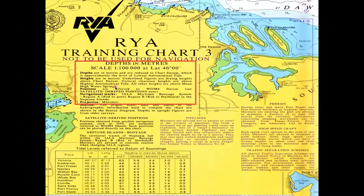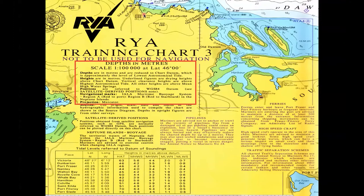Then it goes on to say the underlined figures are drying heights. Anything on an Admiralty chart that dries out is green. If you look carefully at the top of the chart, here's a drying height: 2.7 with a little underline beneath it. That means it dries out 2.7 metres above chart datum. So if you went to that particular spot at low water you would have 2.7 metres of land. If the tide is 5 metres at high water, it needs 2.7 metres of water to cover the drying height — 2.7 from 5 is 3.3 — so you'd only have 3.3 metres of water. That's a drying height.